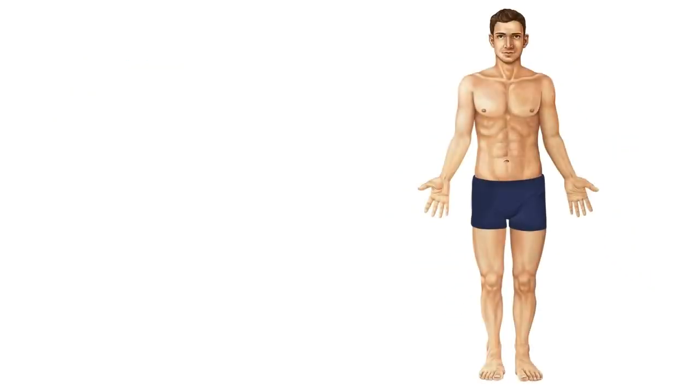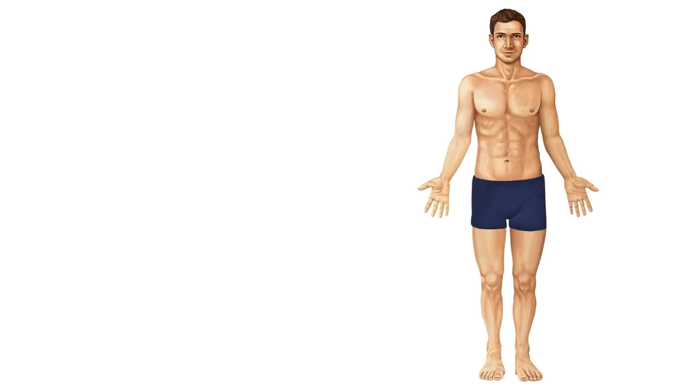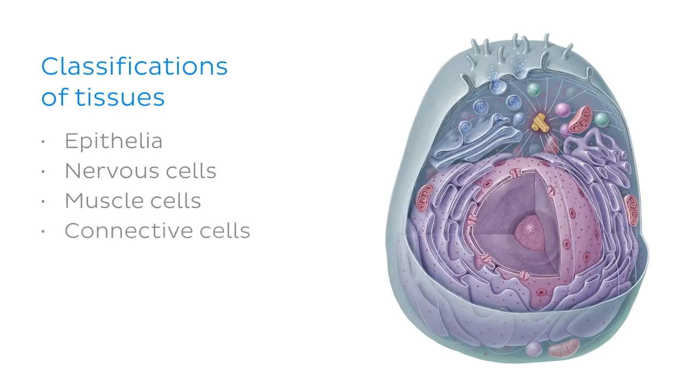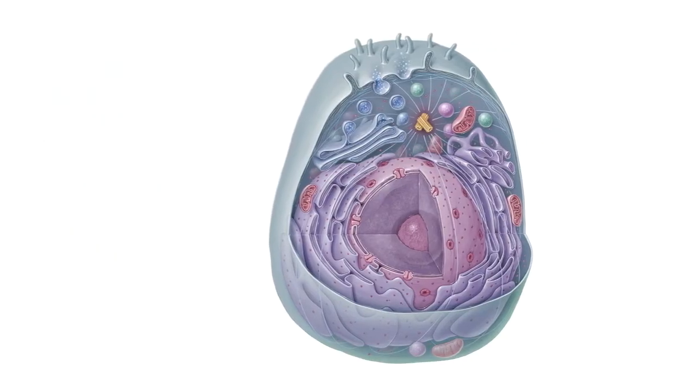Within humans, there's a large degree of variation seen in the eukaryotic cell. We already know that there are four classifications of tissues: epithelia, nervous cells, muscle cells, and connective cells. All of these cells are eukaryotic, but each have a different structure based on their function, and even within these classifications, there exist many different specializations.